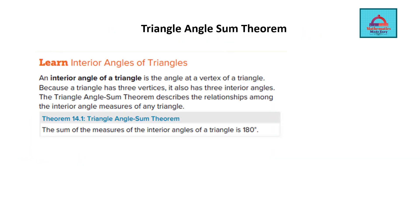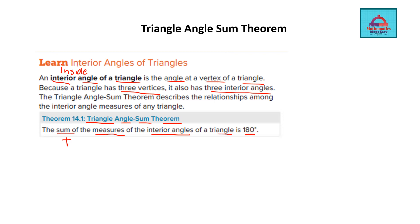Let's first understand the triangle angle sum theorem. An interior angle of a triangle is the angle at the vertex of the triangle — interior means inside. A triangle has 3 vertices, so there are going to be 3 interior angles. The triangle angle sum theorem states that the sum of all 3 interior angle measures is always 180 degrees.